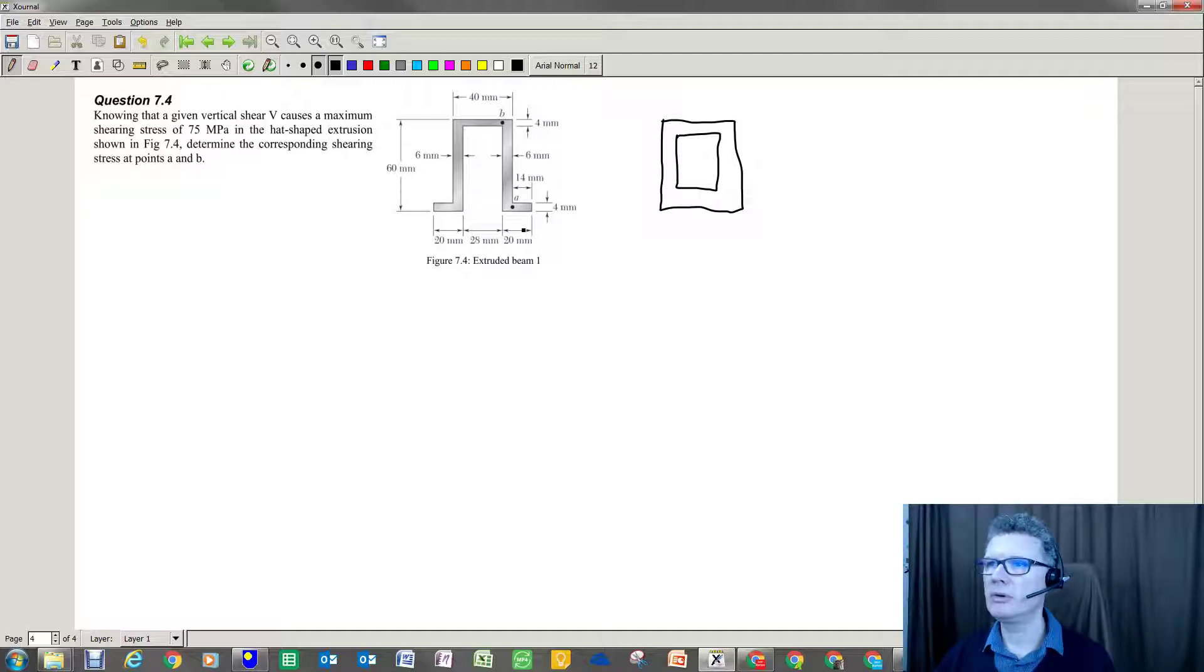So here you've got 6, 20, take away 6 is 14. Flip it across so you've got a box. So that's our first trick to answer this question. The neutral axis is going to be bang in the middle. So y-neutral axis will be given at 30 millimeters.